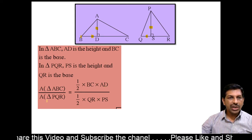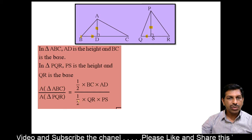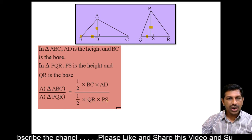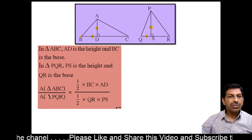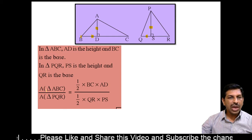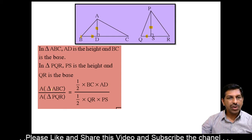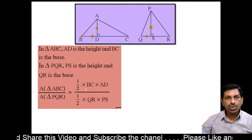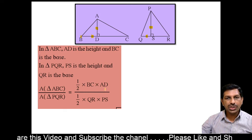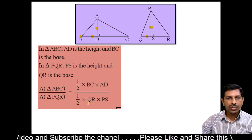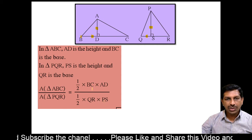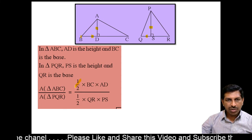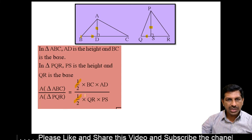Similarly, area of triangle PQR is equal to 1 by 2 into base QR into height PS. Then we take the ratio of these two: area of triangle ABC by area of triangle PQR is equal to (1 by 2 into BC into AD) by (1 by 2 into QR into PS). Now this 1 by 2 and 1 by 2 will get cancelled.